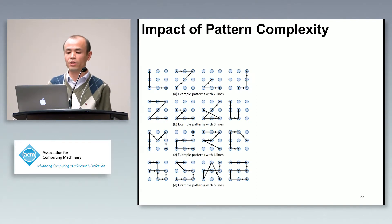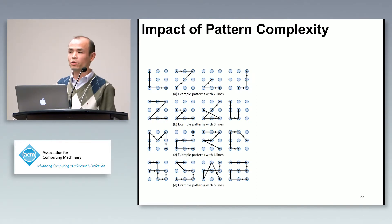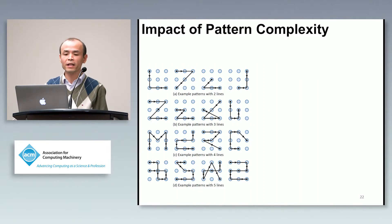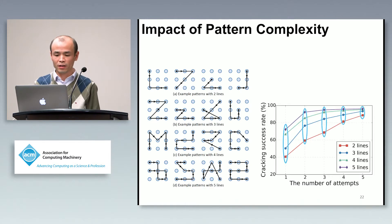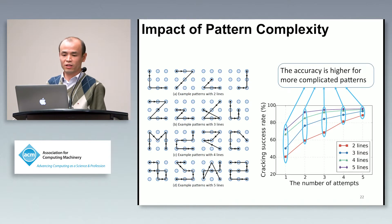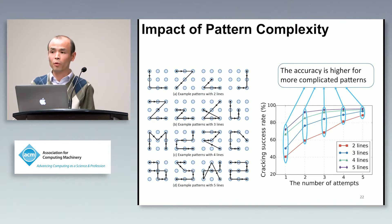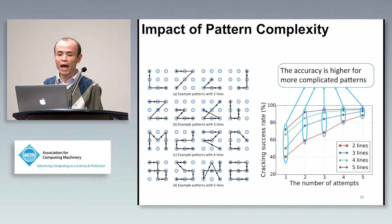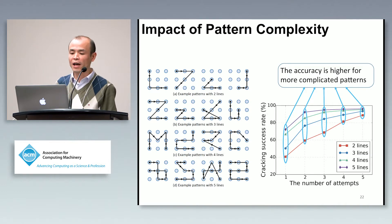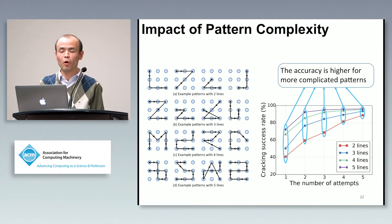Here we show the impact of pattern complexity. Normally users believe that if a pattern has more lines it means more security. However, in our attack, the results show that if the user has more lines in their pattern, we actually achieve higher accuracy. So the accuracy is higher for patterns that include more lines.